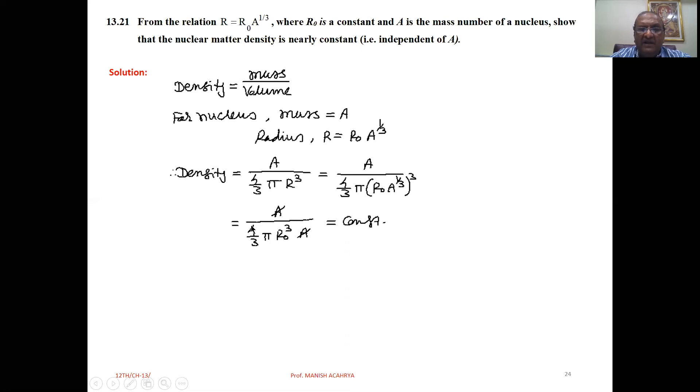Resultantly, we get a upon 4 by 3 pi r0 cube into a. a cancels. Here we can see this is constant. It is proved.